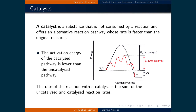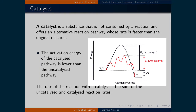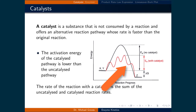A catalyst is a substance that is not consumed by a reaction and offers an alternative reaction pathway whose rate is faster than the uncatalyzed reaction. This second point is illustrated in the figure on the right, where there are two reaction mechanisms plotted according to their energy. The activation energy of the catalyzed pathway, drawn in red, is lower than the uncatalyzed pathway, drawn in black.